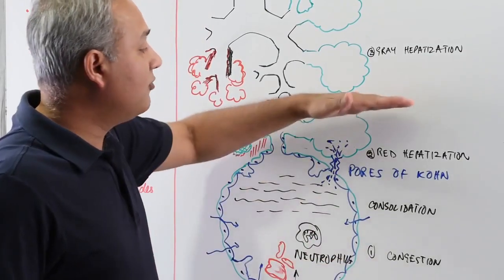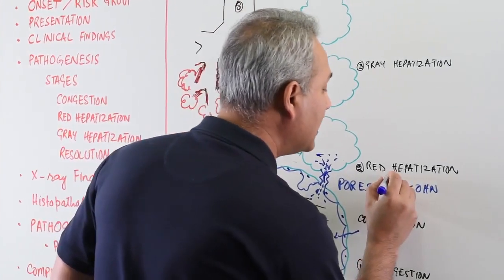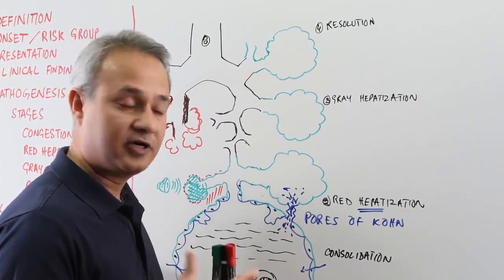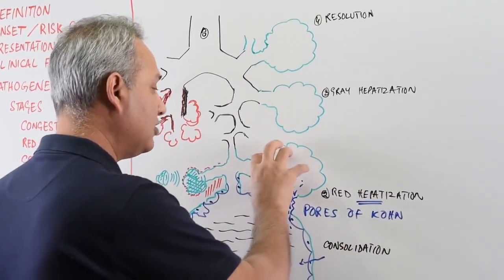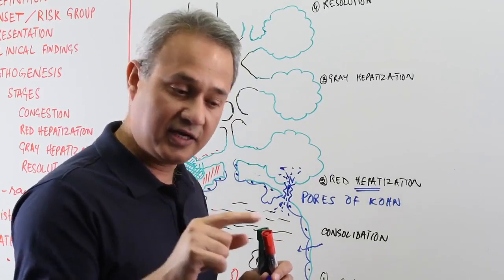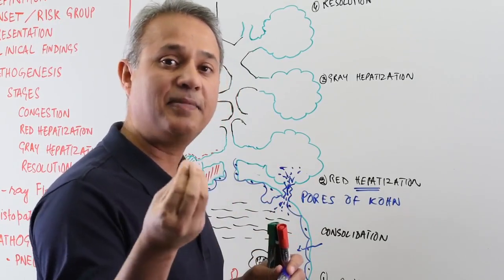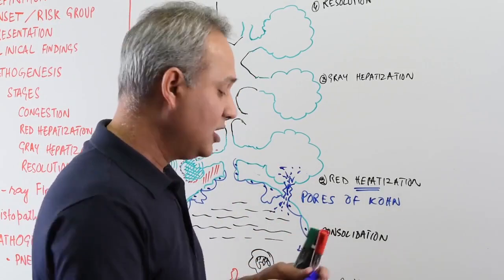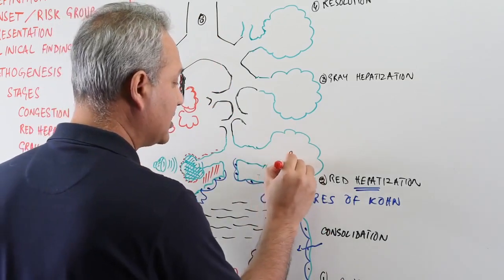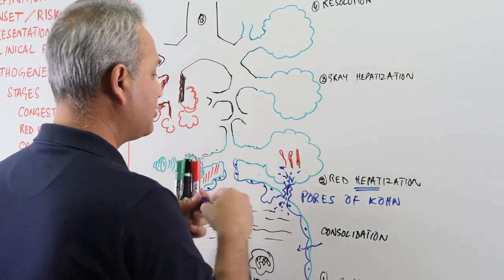Then we move on to the red hepatization. Hepatization, hepatic means liver-like or liver. Red hepatization means now the alveoli or the area of the lung is red in color and the consistency of the area of the lung which is infected is hepatic liver-like consistency. So what is happening now is that again this thing is filled, but now there are lots of RBCs present here.